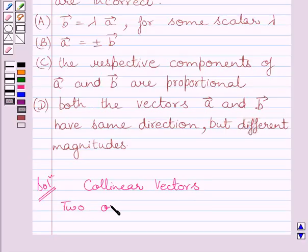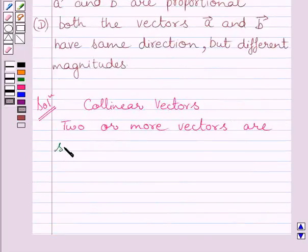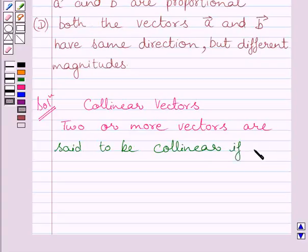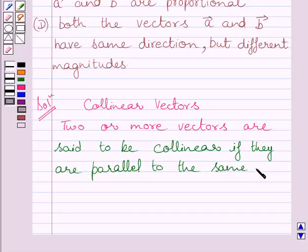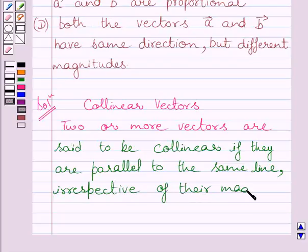So, we can write, two or more vectors are said to be collinear if they are parallel to the same line, irrespective of their magnitudes and directions.